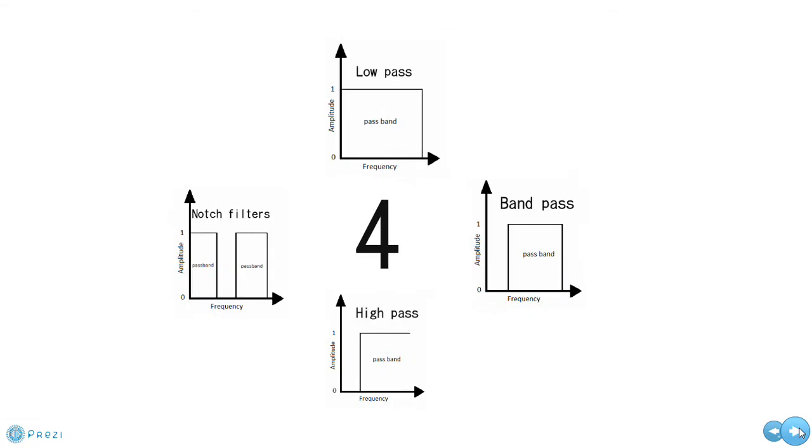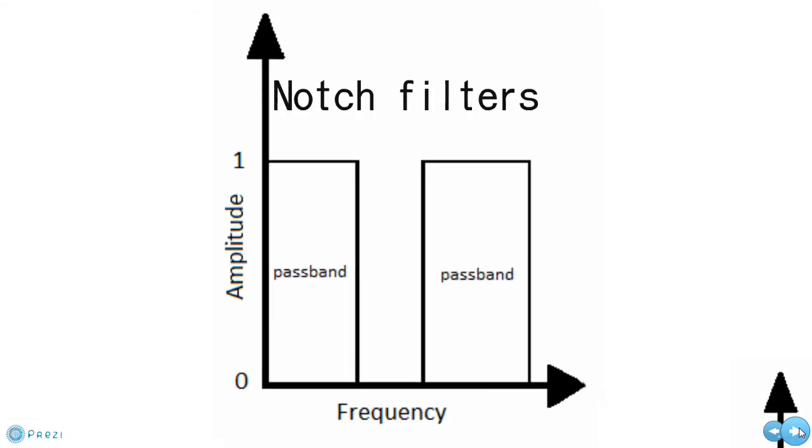And finally, there are notch filters that remove particular frequencies from the signals. For example, they remove the 50 and 60 hertz mains interference that can be experienced when making muscle and nerve recordings. They are rarely used as they can distort the signal of interest and have been superseded by differential amplifiers.